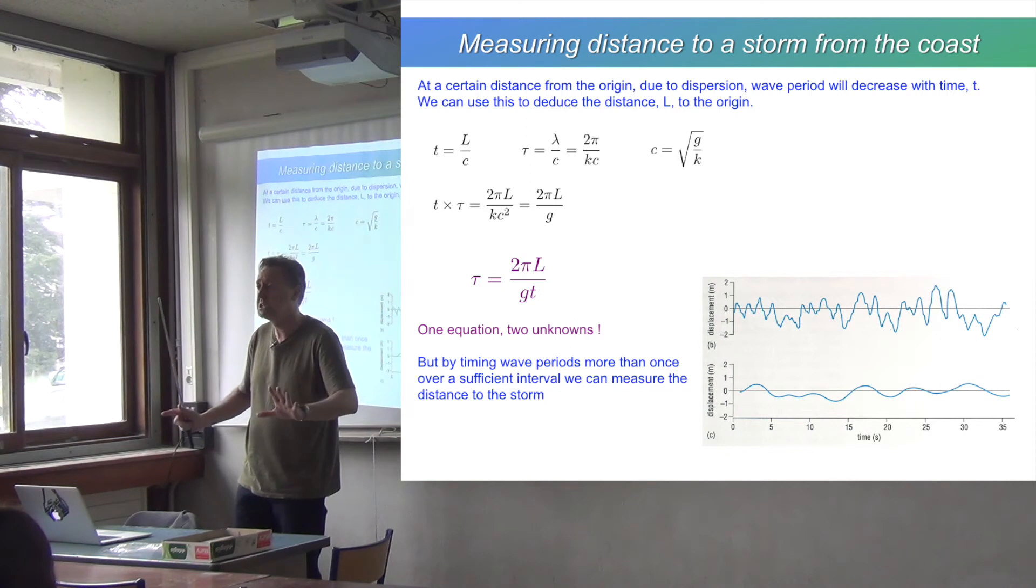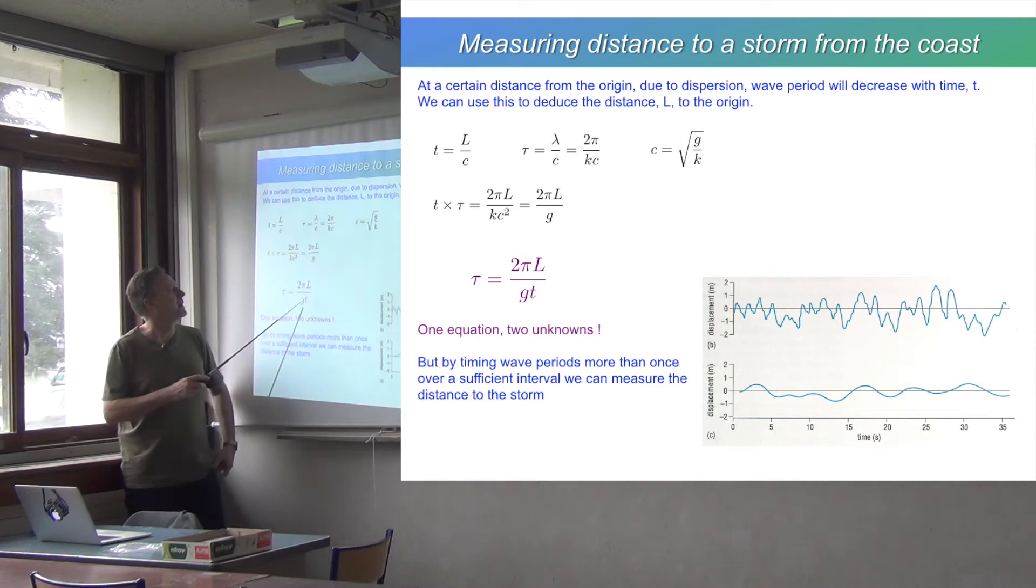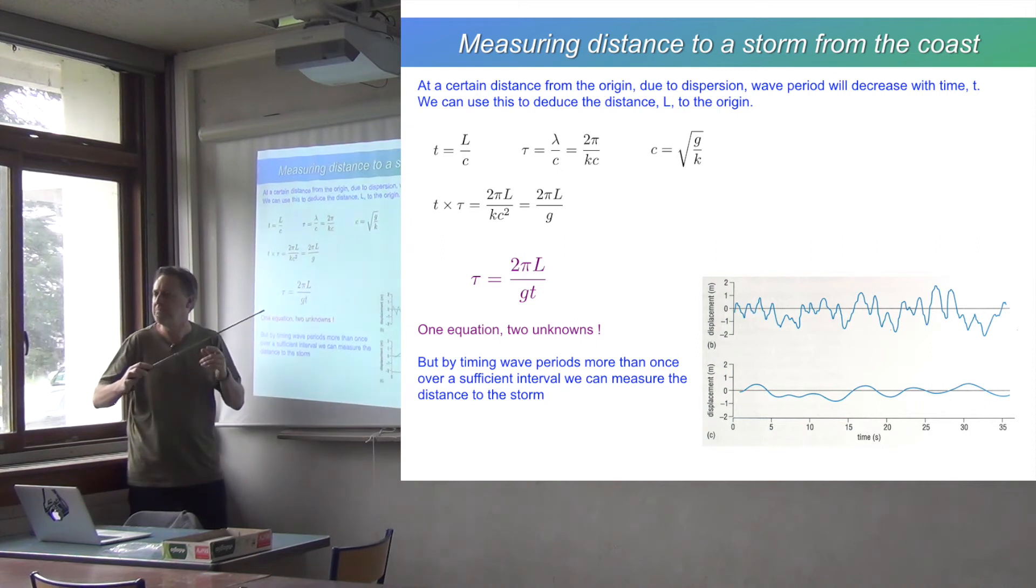And now you know the wave period, you can measure it at the beach. What do you do with that? Well, you can't work out T without knowing L, and you can't work out L without knowing T. So you've got one equation in two unknowns. So what do you do? Bit of a conundrum. Anyone got any bright ideas?